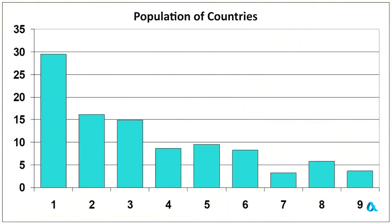Here everything is converted into percentages, and we can see that the distribution of the first digit is by no means uniform, as many of you might have expected. 1s are the most common, making up as much as 30%. 2s and 3s together also account for 30%, and the remaining 6 digits make up only 40%. But maybe this is just a coincidence.